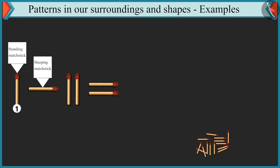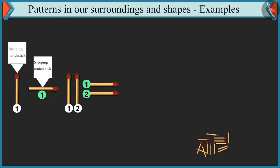First, there is one standing matchstick and then one sleeping matchstick in this pattern. Next, there are two standing matchsticks and two sleeping matchsticks. It means, here the number of matchsticks is increasing by one each time. Oh yes. First, one one matchstick and then two two matchsticks.